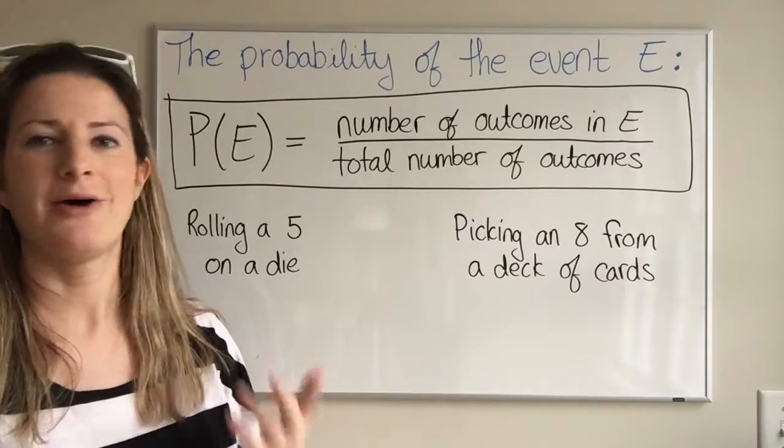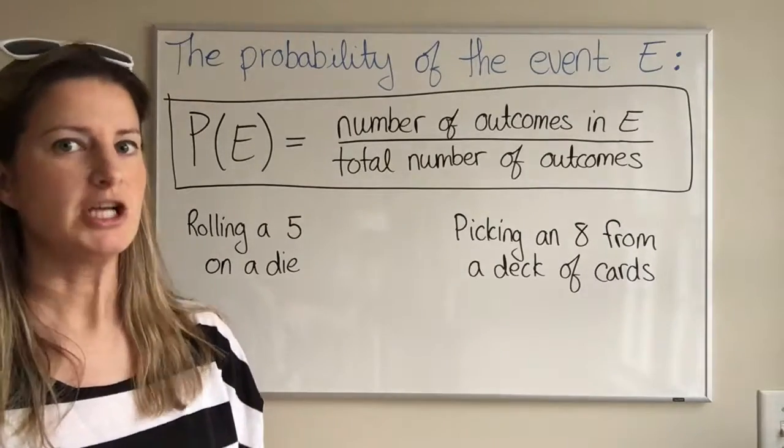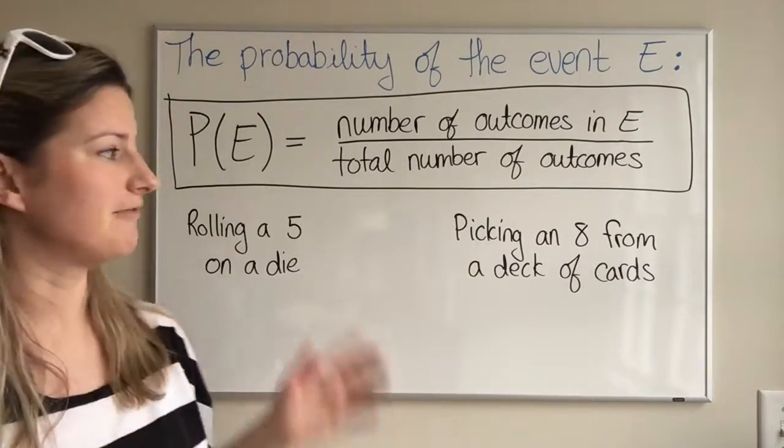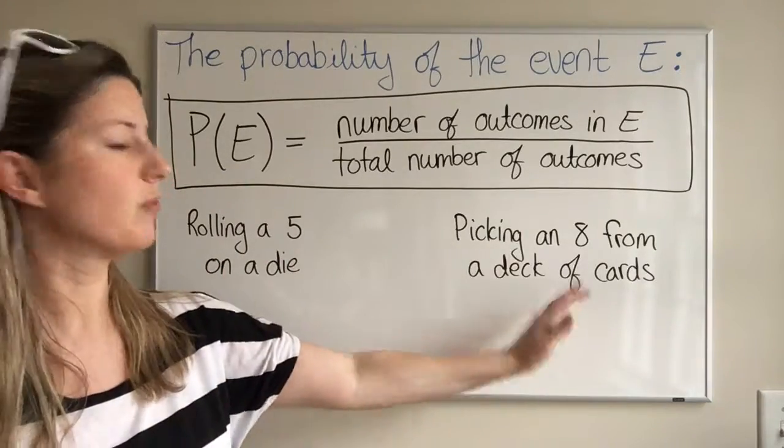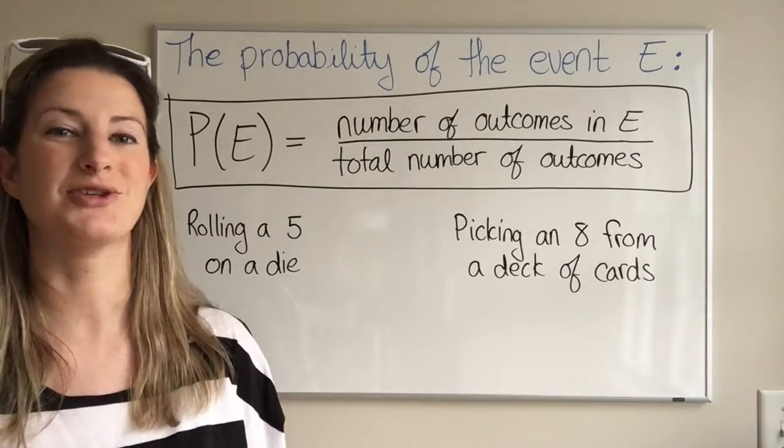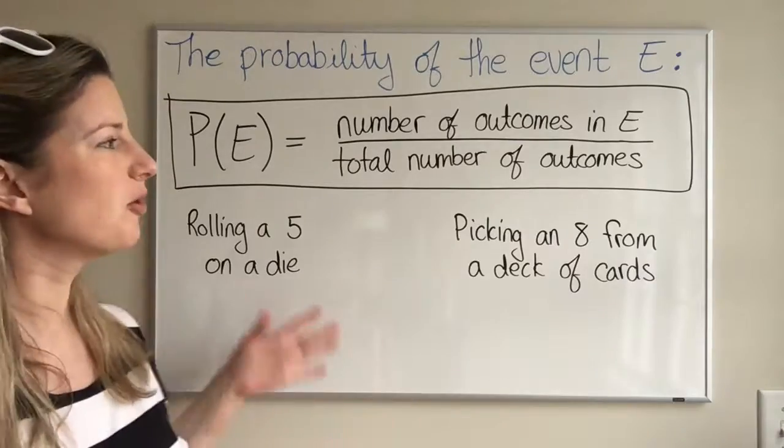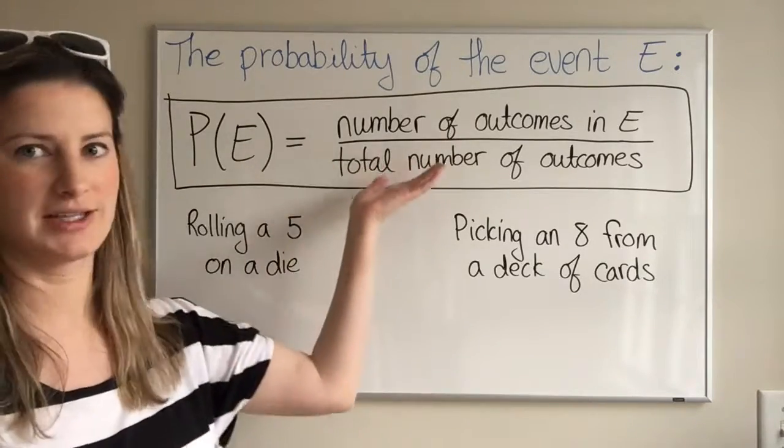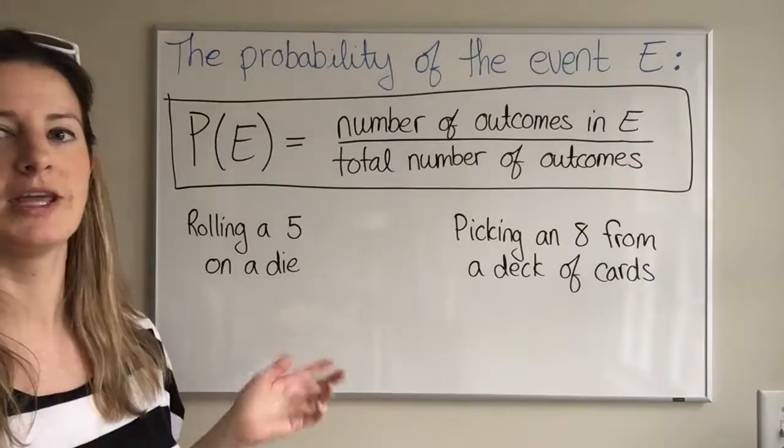But you're probably wondering, how am I going to do this? What if I forget it? My suggestion is to think of two probability questions that you can answer intuitively, and then you can almost derive this formula or backtrack to it if you think about what you're doing.